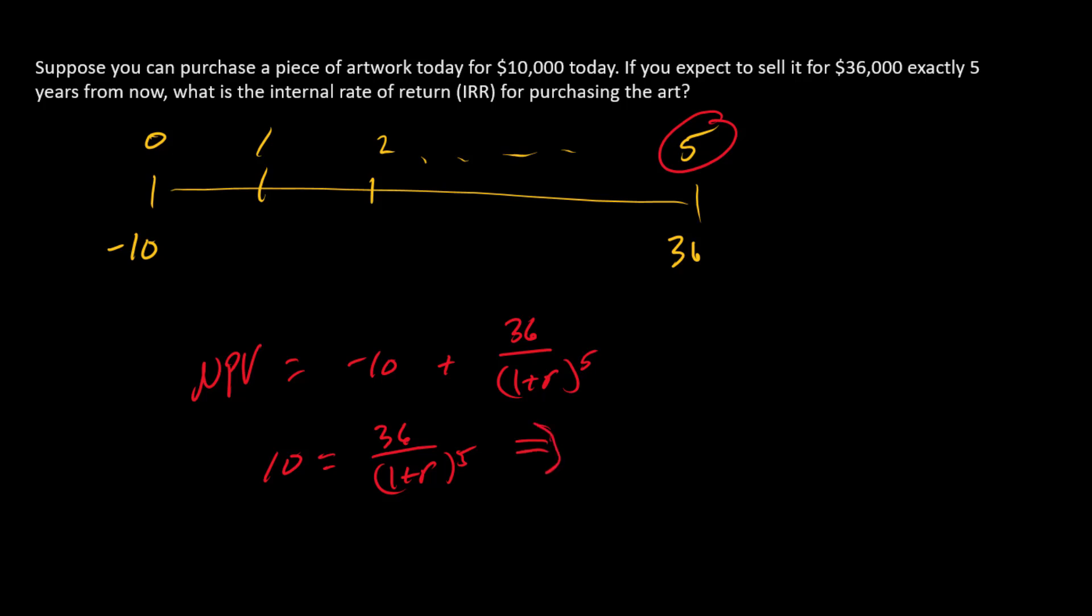Solving for R, we have 36 over 10 equals 1 plus R to the fifth, or 36 over 10, raise that to the one-fifth power, subtract 1, and we have the IRR, and that's 0.2920, or 29.2%. So that's the IRR.